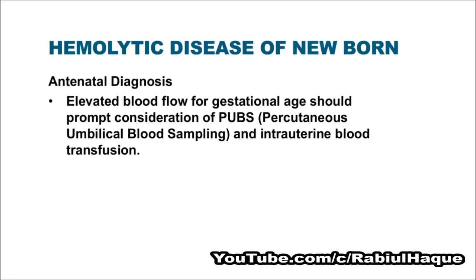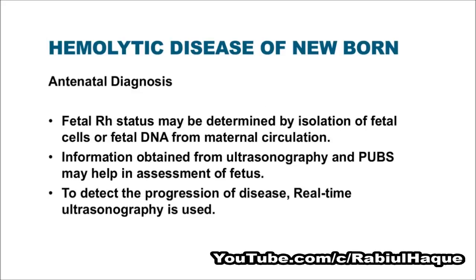If we see elevated blood flow with the help of Doppler ultrasonography, percutaneous umbilical blood sampling and intrauterine blood transfusion may be considered. Fetal Rh status may be determined by isolation of fetal cells or fetal DNA from maternal circulation. Information obtained from ultrasonography and percutaneous umbilical blood sampling may help in the assessment of the fetus. Real-time ultrasonography is also used to detect the progression of disease.